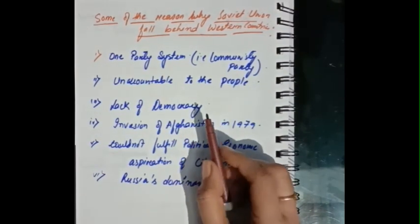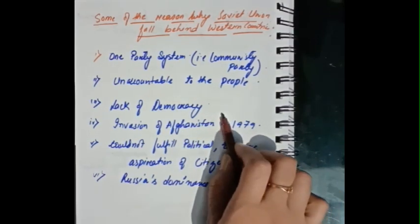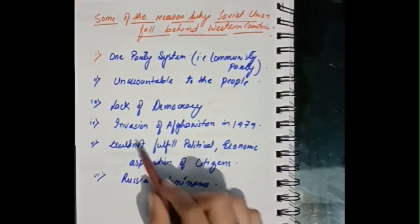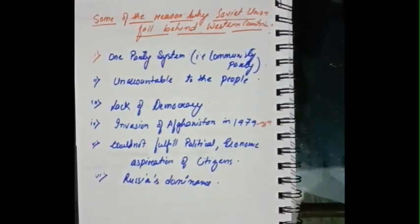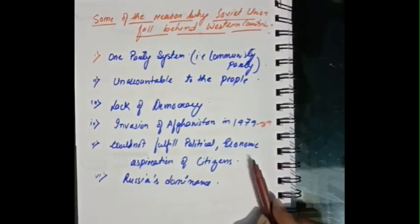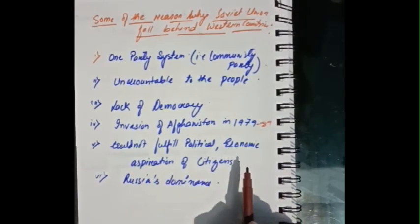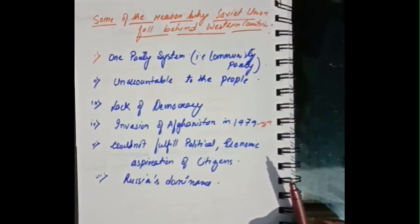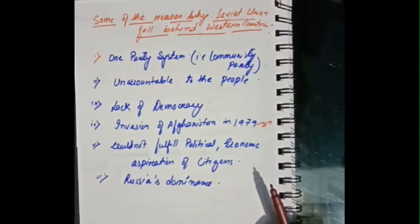Due to the lack of democracy in the USSR, people did not have individual rights or freedom of speech. The Soviet invasion of Afghanistan from 1979 to 1989 weakened the system further. The Soviet Union also lagged behind Western countries because it could not fulfill the political and economic aspirations of its citizens. Additionally, though the USSR comprised 15 countries, only Russia was dominating everything, and people from other regions felt neglected and suppressed.